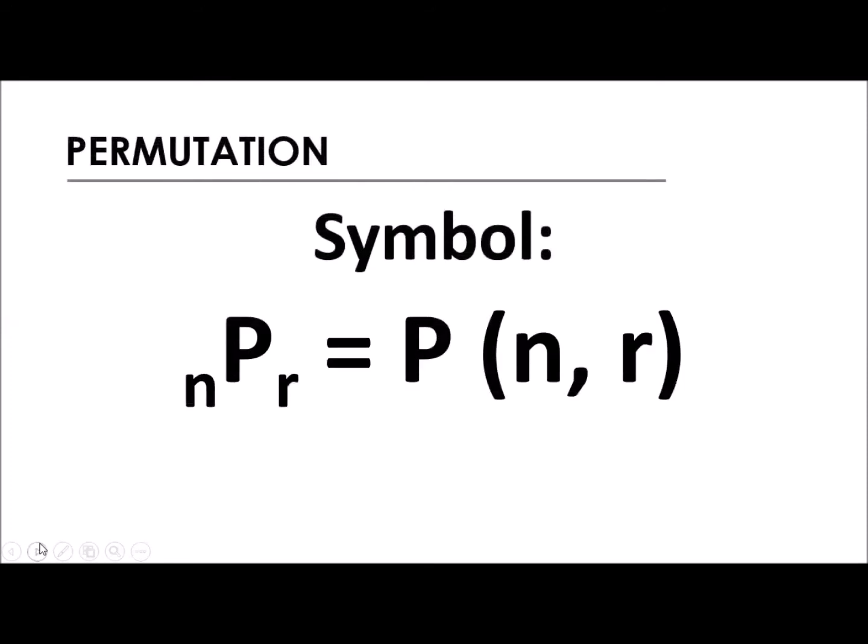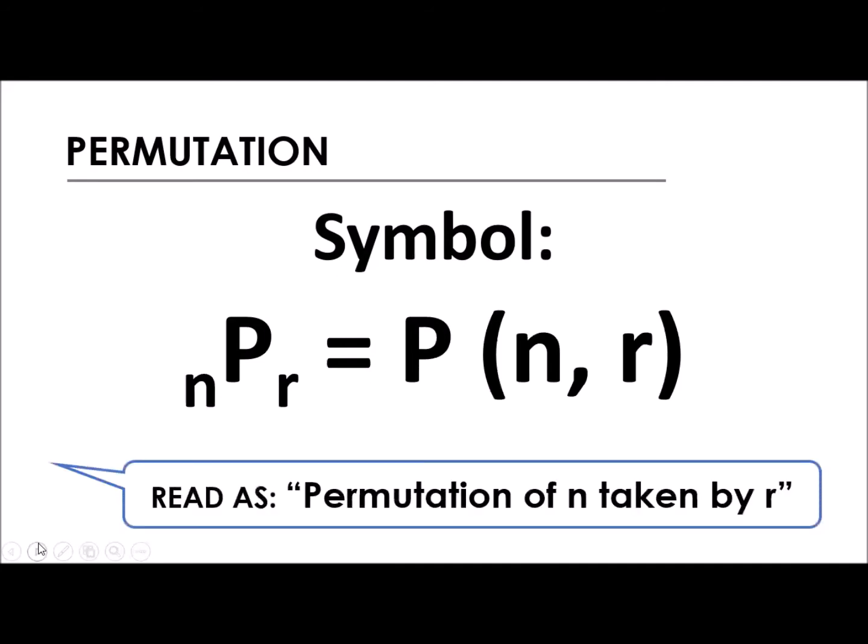So let's have the symbol. These are the symbols. Actually there are many others, but these are the commonly used ones that are easy to encode. And it is read as permutation of n taken by r. Permutation of n taken by r.